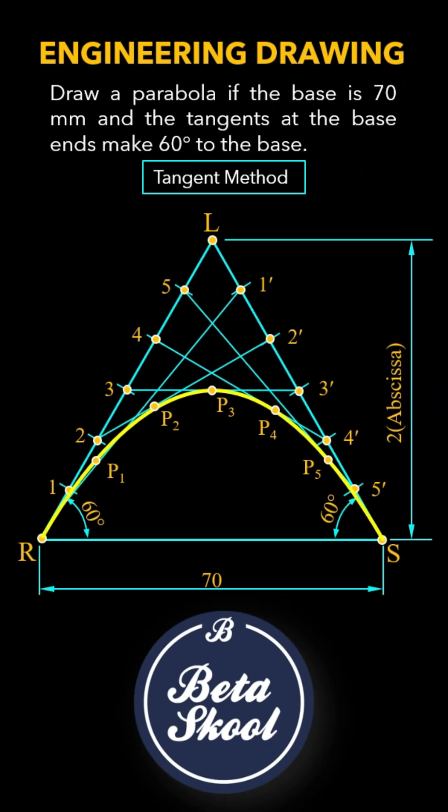First, drop a perpendicular from point L onto the double ordinate or base RS and mark it K. Mark the point P on the parabola. From P, draw a perpendicular line onto the abscissa P3K. Label the intersection as S.